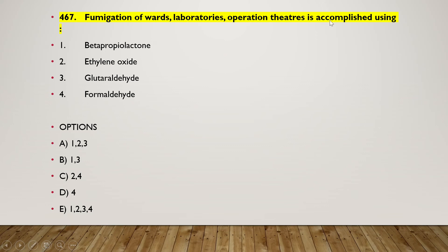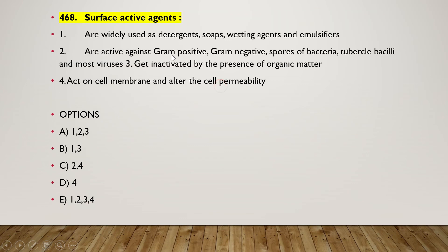The next question: fumigation of wards, laboratories, and operation theaters is accomplished using beta-propiolactone, ethylene oxide, glutaraldehyde, or formaldehyde. The right answer is option D — formaldehyde is the right answer, which is used in fumigation.